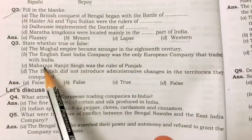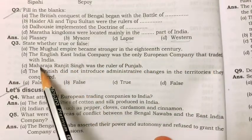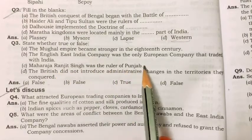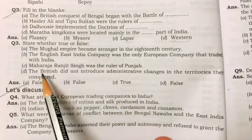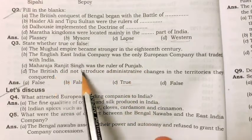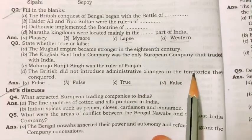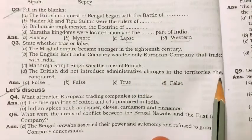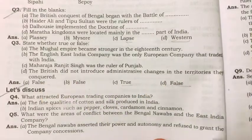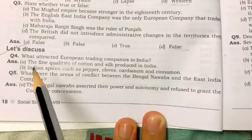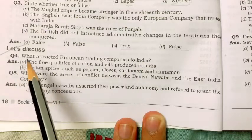The English East India Company was the only European company that traded with India — false. Maharaja Ranjit Singh was the ruler of Punjab — true. The British did not introduce administrative changes in the territories they conquered — false. Let's discuss: what attracted European trading companies to India?